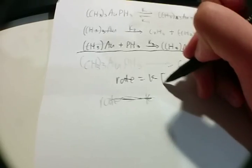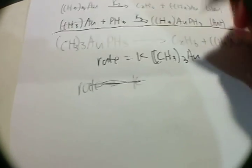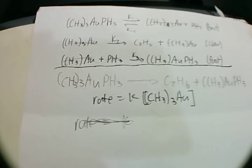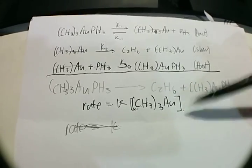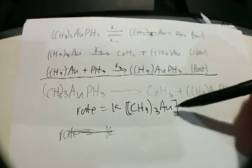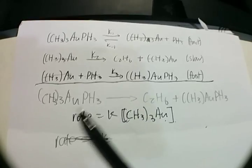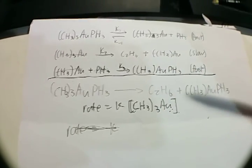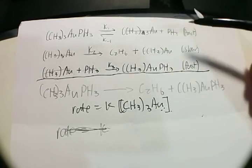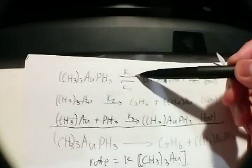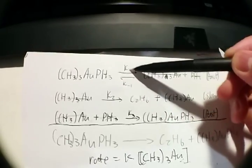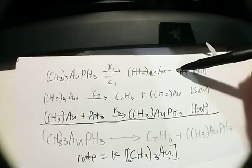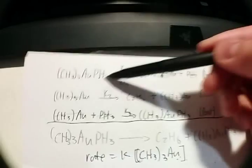So: rate = k[CH3(3)AU]. However, the problem is that CH3(3)AU is an intermediate, so this rate expression won't work as-is. In order to solve for the right equation, we can use the first step, because it has a double arrow meaning it's an equilibrium — these molecules can react forward and backward at any time.